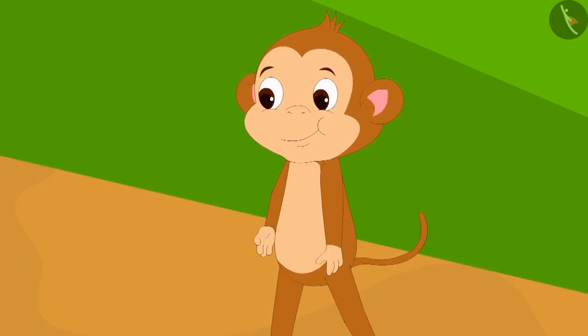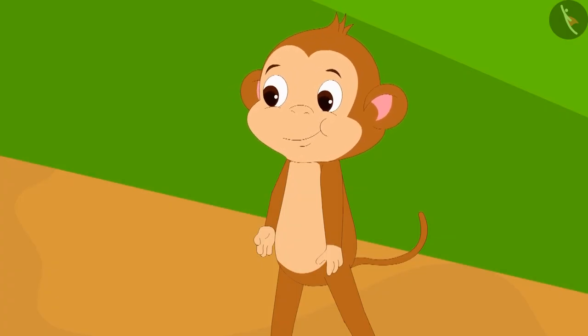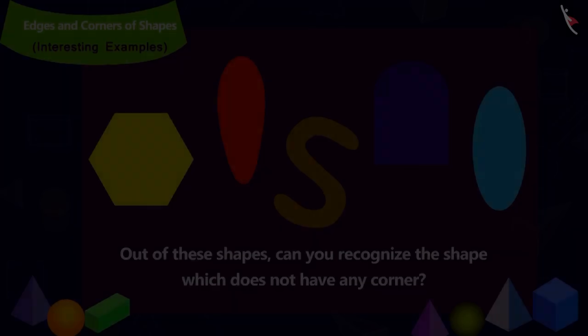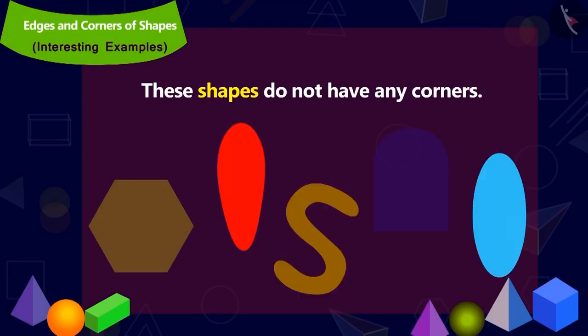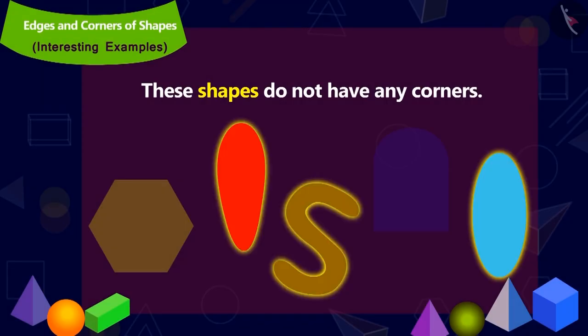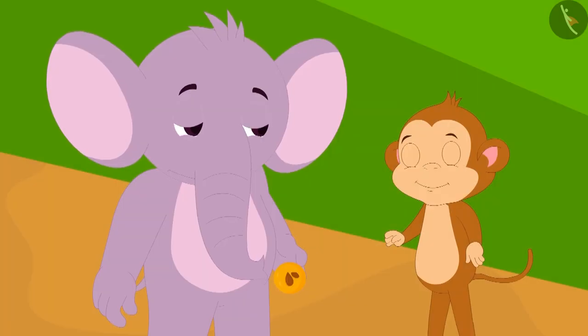And he quickly ate up the kaju katli too. Children, before Appu's next question — amongst all of these shapes, can you recognize the shape which has no corners? This is the right answer. These shapes have no corners.